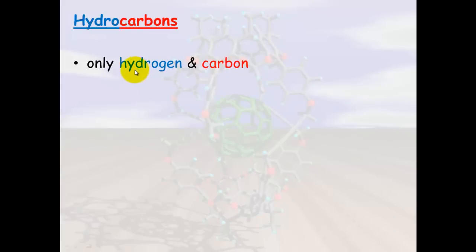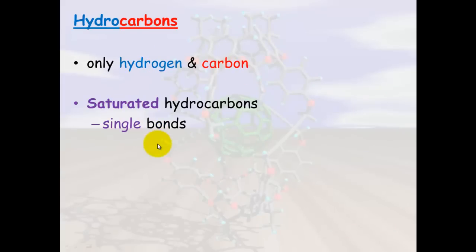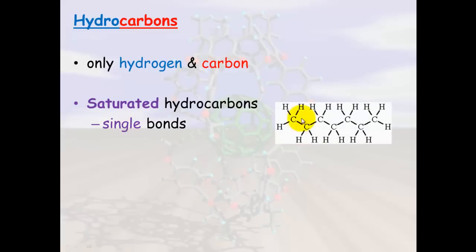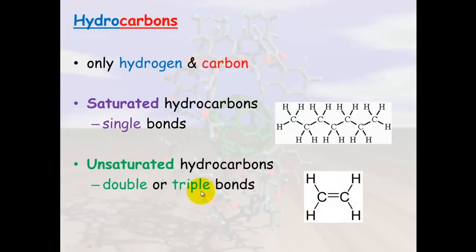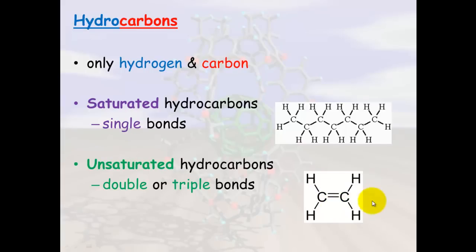Hydrocarbons contain only hydrogen and carbon. You can have saturated hydrocarbons, which only have single bonds, or you can have unsaturated hydrocarbons, which have double or triple bonds. The reason these are called unsaturated is that these double bonds can open up and another hydrogen could join onto them — so they're said to be unsaturated because carbon could still potentially bond to another atom.